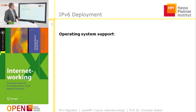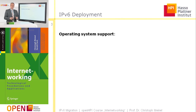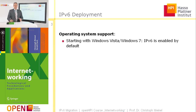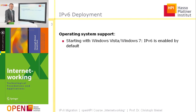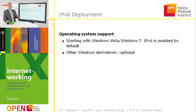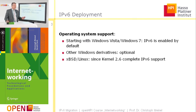What is to be said about IPv6 deployment? One has to consider whether operating systems are ready to work on the basis of IPv6. Looking through different operating systems, PC and consumer systems are ready for IPv6. For example, in the Windows world, starting with Windows Vista and Windows 7, IPv6 is enabled by default. In other Windows versions, it is optional.